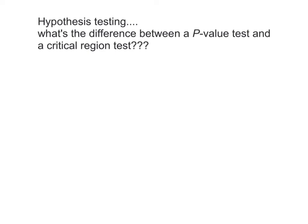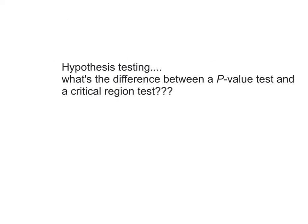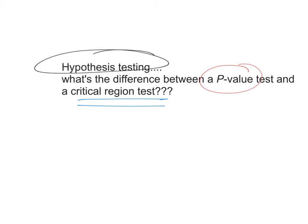Addressing a question today about hypothesis testing: we have two different types of tests — the p-value test and the critical region (or rejection region) test. Since both are doing a hypothesis test, what's the difference between the two?